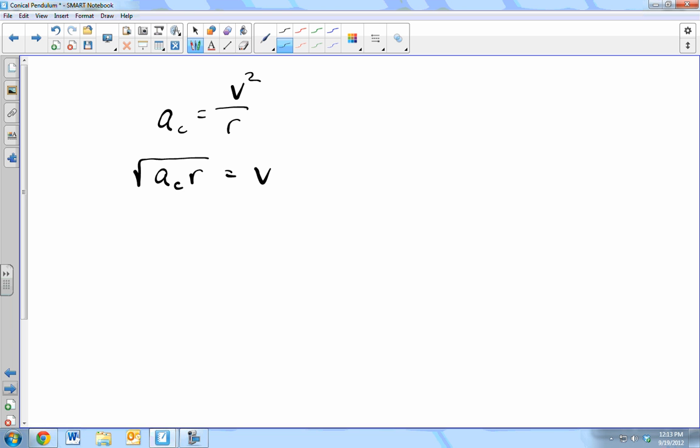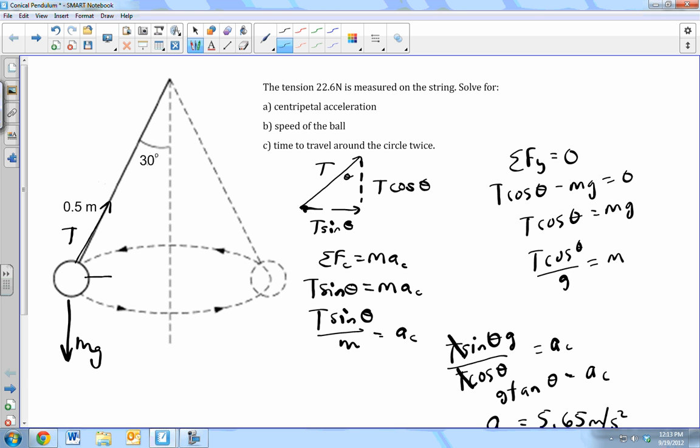So we need to know the centripetal acceleration, which we do, and the radius, which we do not. So we need to first solve for the radius of the circle.